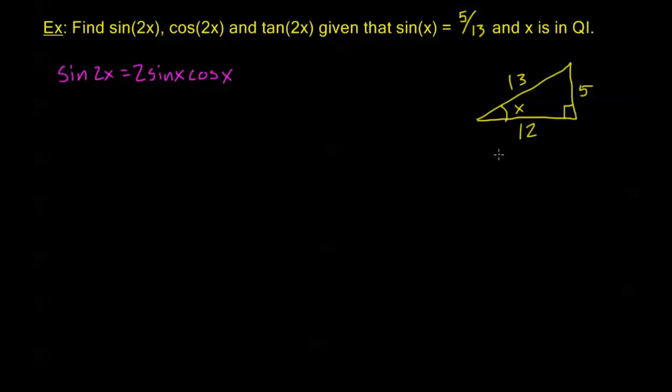Now we can continue on from here. From this triangle, I get that cosine of x equals 12 thirteenths and tangent of x equals 5 twelfths. This gives me all the information I need to plug into my formulas. We're in quadrant one, so these are all positive values.